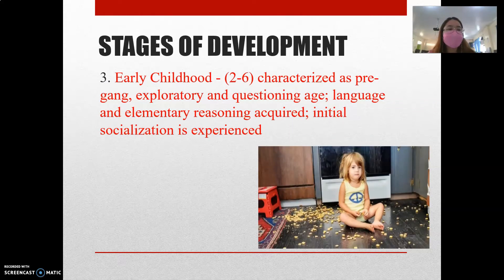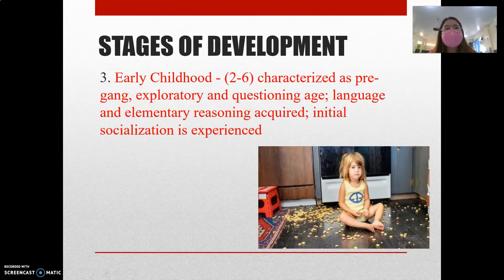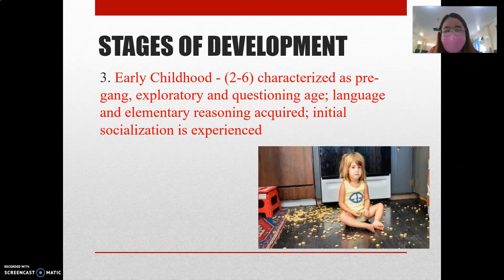The next stage is early childhood, from age 2 to 6 years old. This stage is characterized as the pre-gang period. As you can see, the child enters the 'no' stage — when parents tell them to do something, the child will often say no, like a member of a gang. The child becomes rebellious and now knows how to say no to family members.